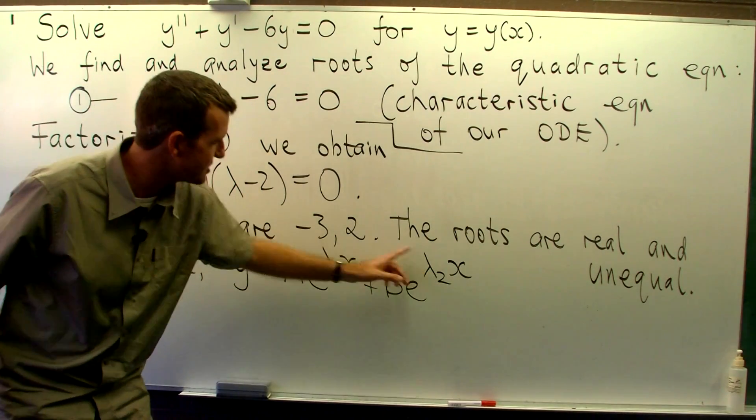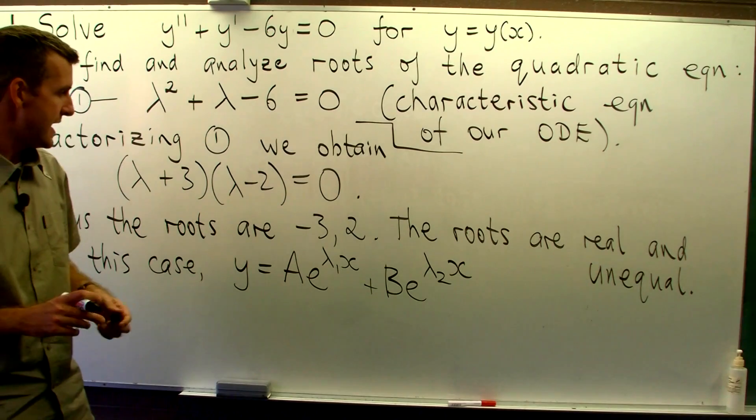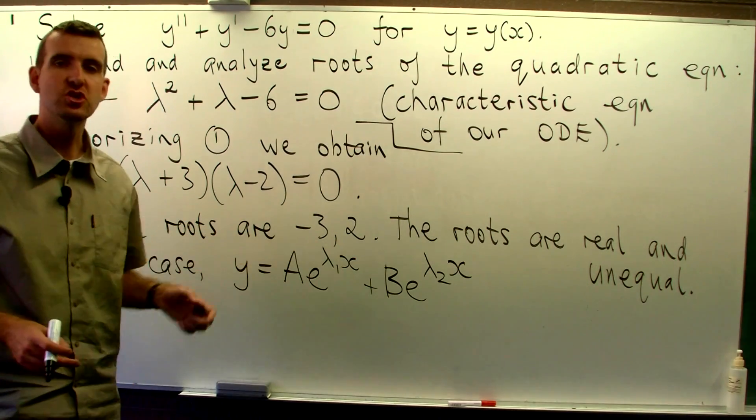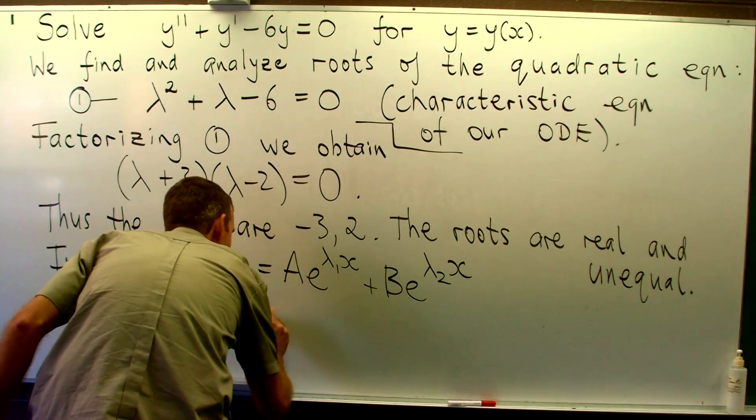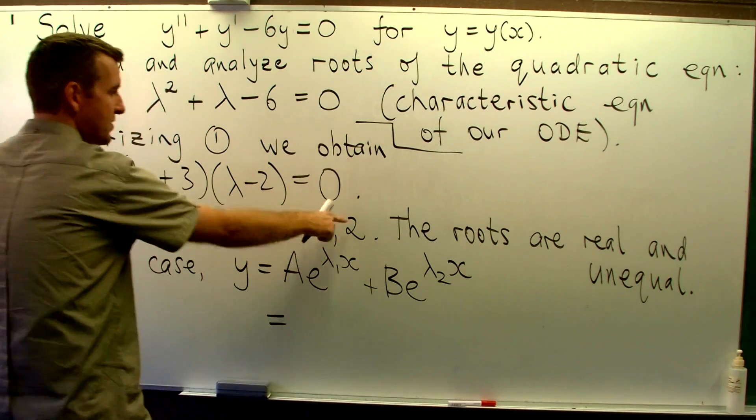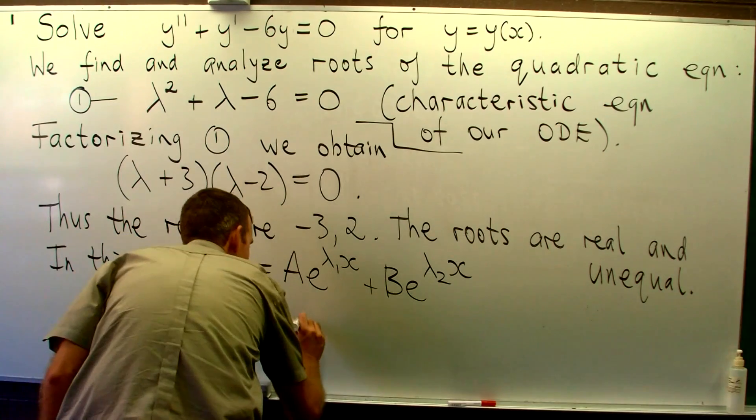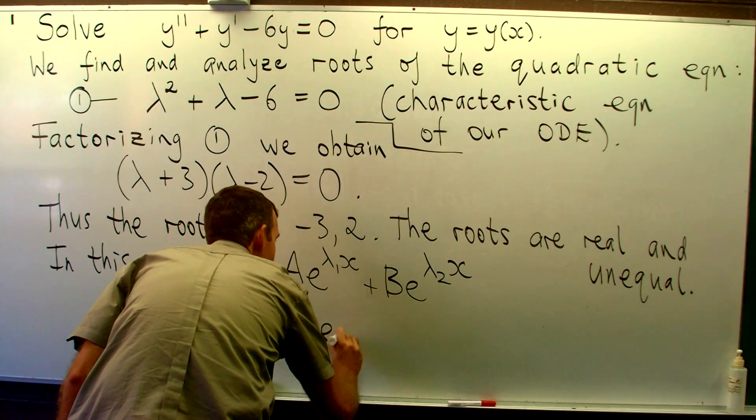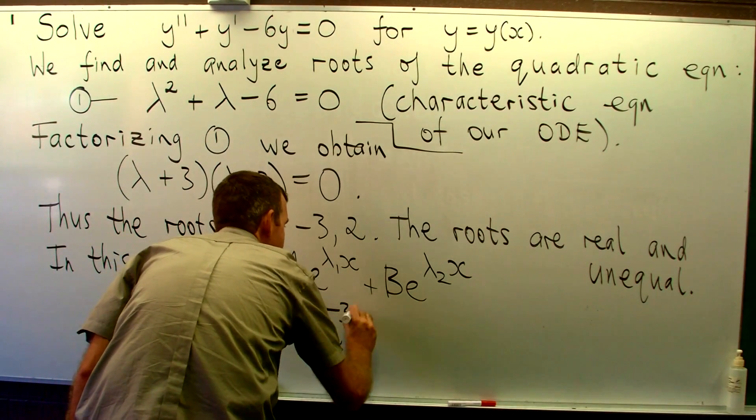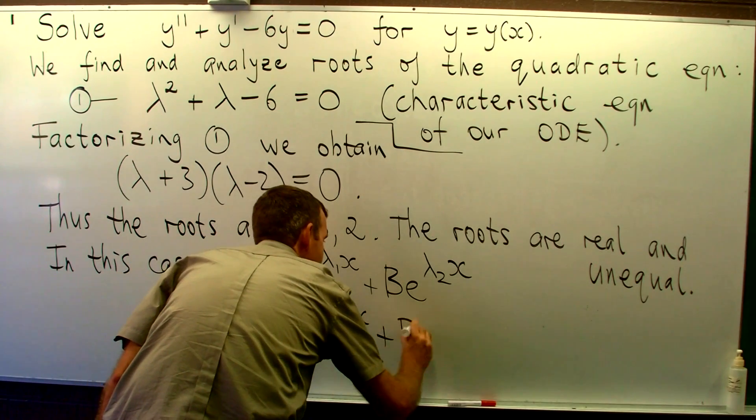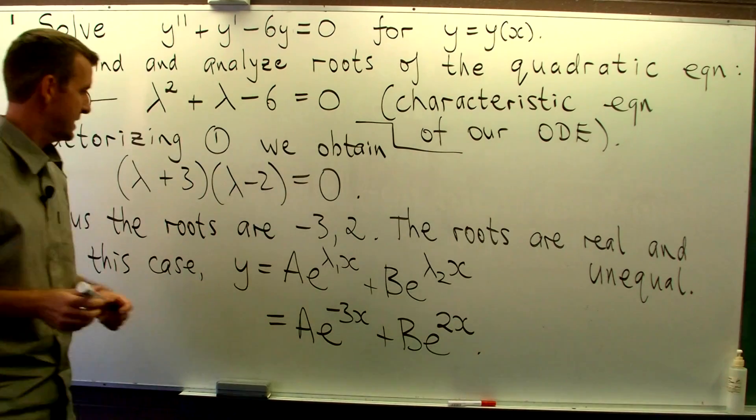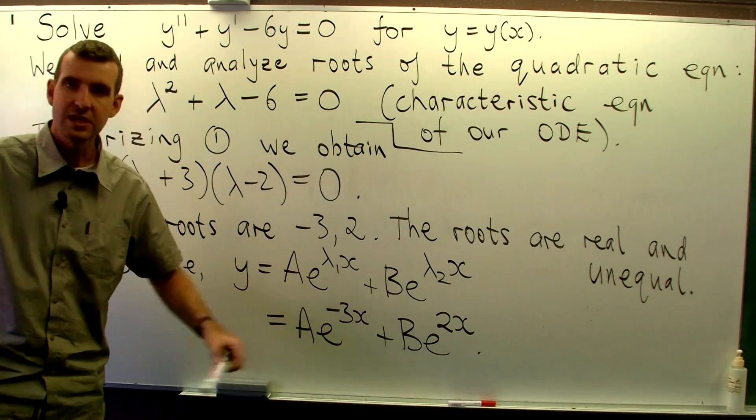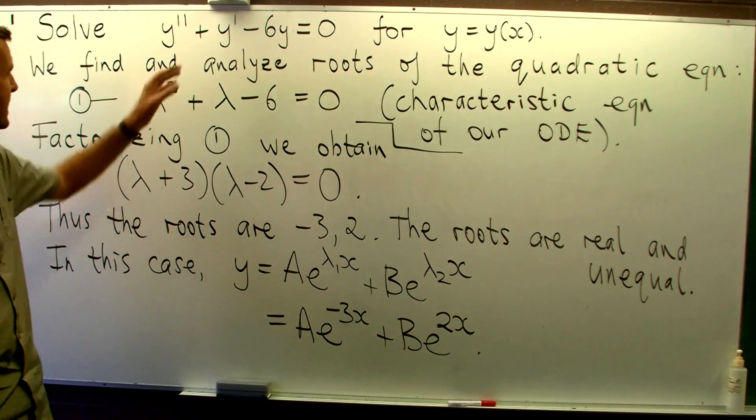The lambda 1 and lambda 2 are the roots, and this is known as the general solution. So all we do now is fill in the lambda 1 and lambda 2 with either root, it doesn't matter which way you put them in, and this is the general form of the solution to our original problem.